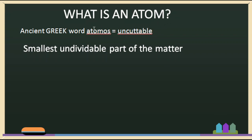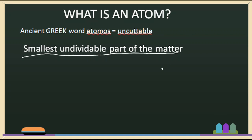So, what is an atom? Atom is an ancient Greek word meaning uncuttable — something that cannot be cut or broken further. Atom is the smallest indivisible part of matter.